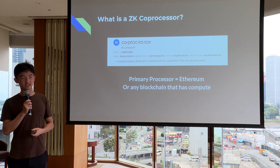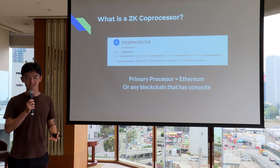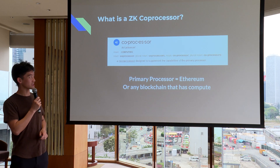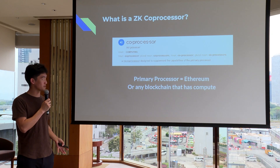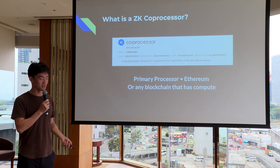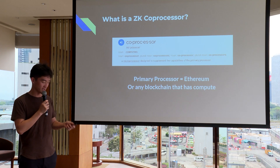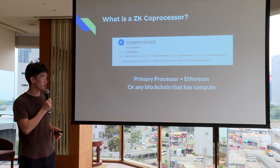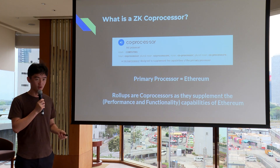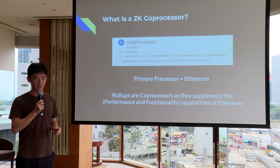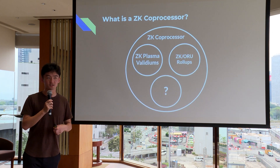Today I want to talk about the idea of a ZK coprocessor — a term we hear a lot, but what exactly is it? A coprocessor is a processor designed to supplement the capabilities of a primary processor. In this context, the primary processor is Ethereum or any other base layer, and rollups have been how we supplement its capabilities. So in some ways, we might think of rollups as coprocessors.